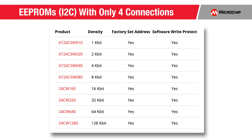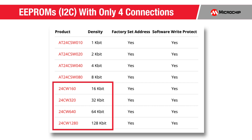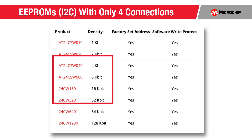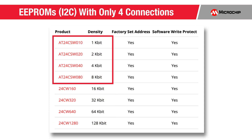We offer a 4-ball EEPROM in all densities from 1 kilobit up to 128 kilobits, all in production and shipping today. Note that the four largest densities include the ability for you to change the slave address in your application, and the four smallest densities include 256 extra bits for identification and tracking.